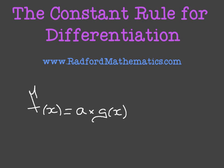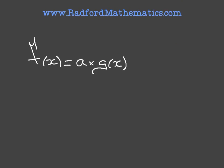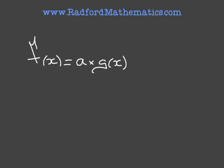Now, what the constant rule tells us is that if we want to differentiate f of x, then f dash of x will be equal to a times the derivative of g of x. That's g dash of x. And that's the constant rule.